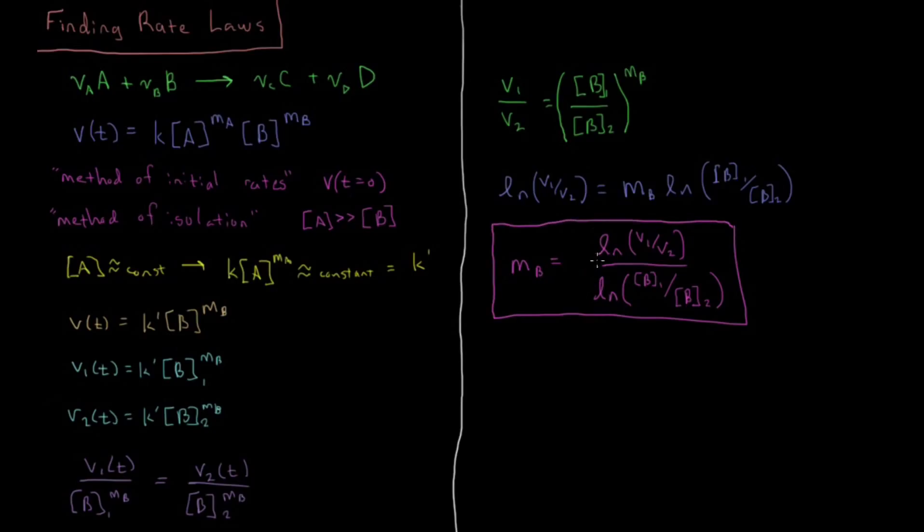So as long as I have constructed things in a way where I'm measuring the rate when there is a constant concentration of A between these two reactions, then I can use this formula here and determine the reaction order in B. And then once I've determined B, I can either do the same thing for A where I measure it with a constant concentration of B, or at that point I know MB so I only have one variable left. But you might potentially have other reactants, so maybe it's just best to do the experiment the same way for A as you did for B, keeping the concentration of B constant and measuring the rate as you vary the concentration of A.